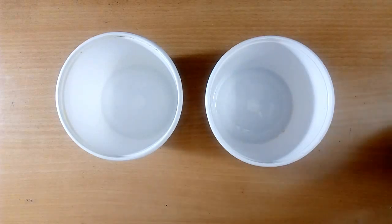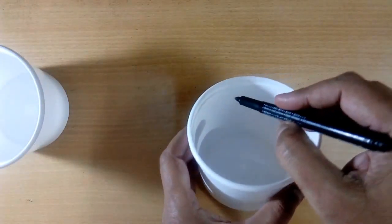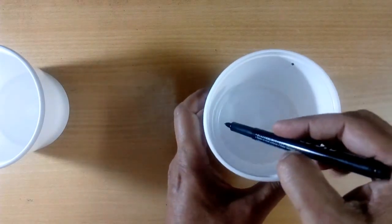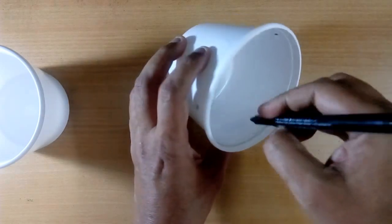We will take a pen and we will mark three equal places. One here, one here, and one here.